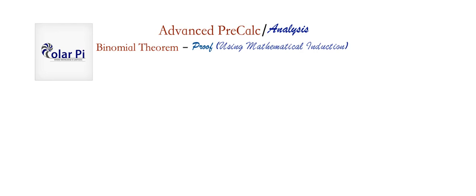All right. This is the theorem we're trying to prove, which in some quarters is called the binomial expansion formula. But whatever you choose to call it, what we want to show is that the left-hand side is equal to the right-hand side, and we're going to do it using induction.